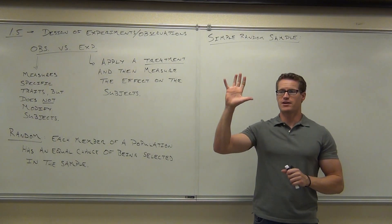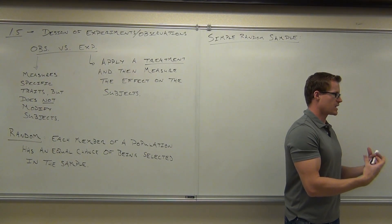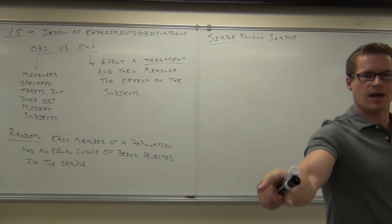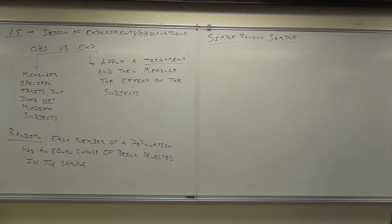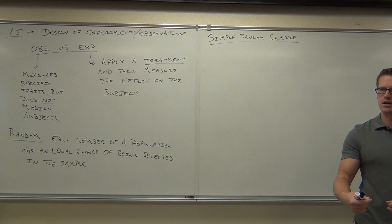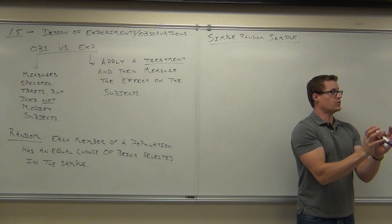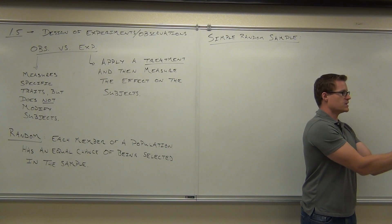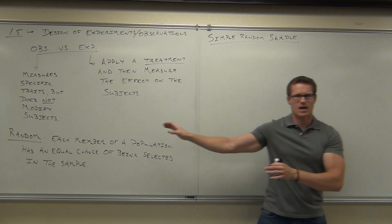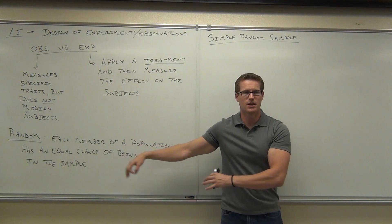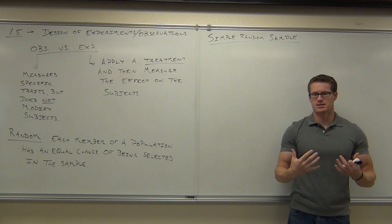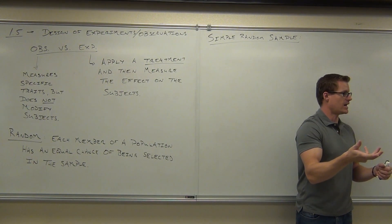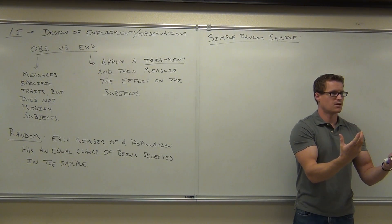Here's what that means for this classroom. If I was going to pick out five people in here, a simple random sample means any five people I picked has an equal chance of being selected as any other five people. No single group can be singled out as having a special case or being selected more often — then it would not be simple random. Random sample means every individual has an equal chance of being selected. Simple random means every group of the same size — each group of size n — has an equal chance of being selected. That's the simple random idea.